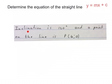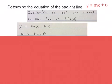The first question says the inclination is 120 degrees and the point on the line is P(4,0). The first thing I do is write down the two formulas that I need: y equals mx plus c and the formula m equals tan θ.